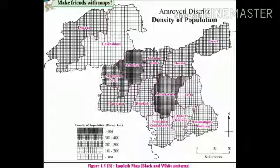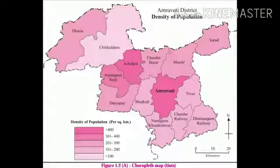You can see in this map that in Amravathi, the lines are closer to each other, whereas in Chikhaldhara the lines are far away from each other. Lines which are closer indicate more population and lines which are far away indicate less population. Similarly, in Amravathi the pink shade is darker and in Chikhaldhara it is lighter. So in both ways — using line patterns or color shades — we can prepare the choropleth map.